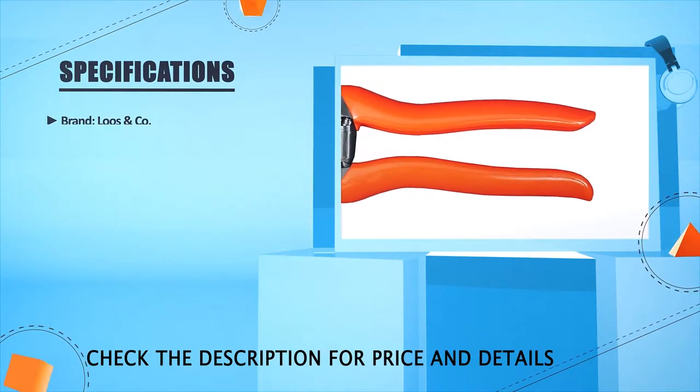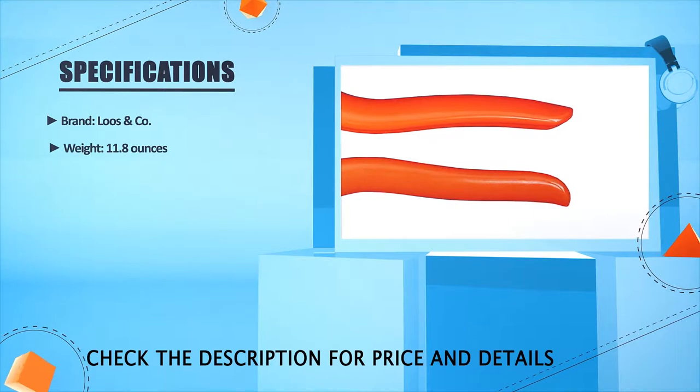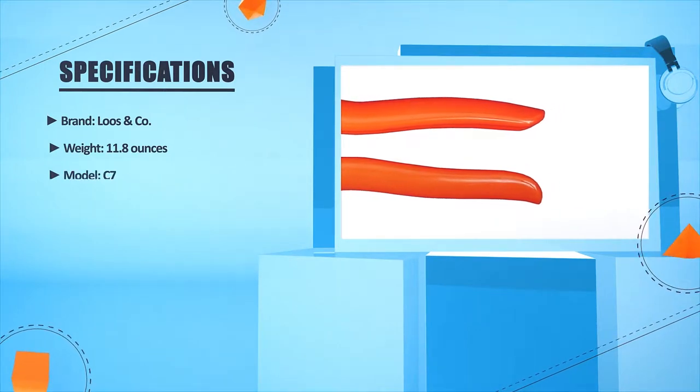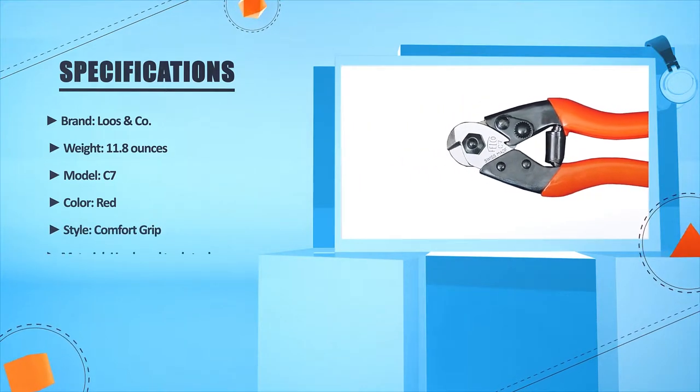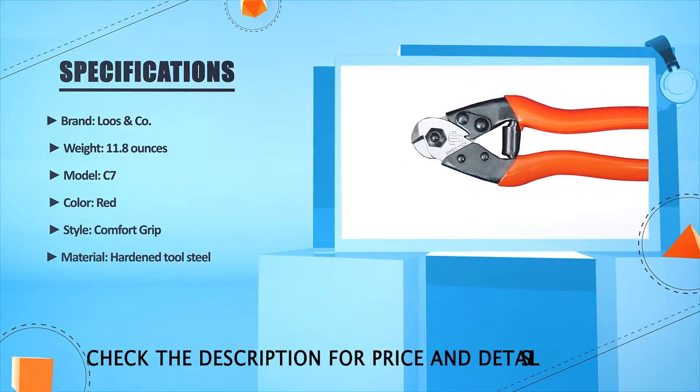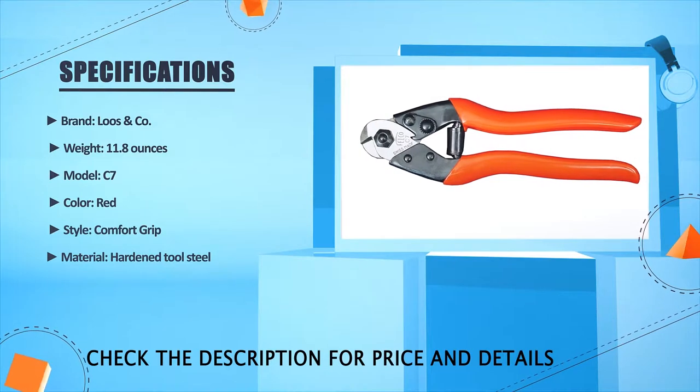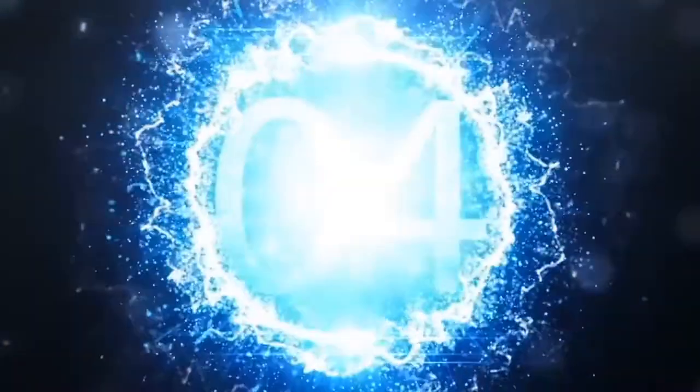Brand: Loose & Co. Weight: 11.8 oz. Model: C7. Color: Red. Style: Comfort Grip. Material: Hardened tool steel.